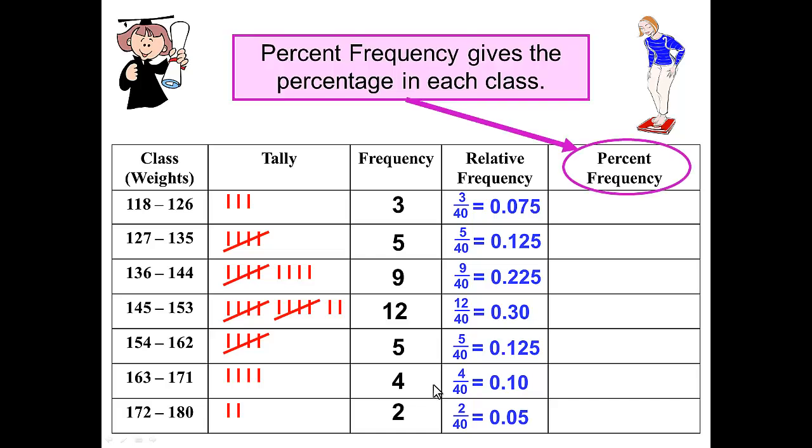And we can find and proceed to find the percent frequency, which gives the percentage in each class. This is where we express the percent of numbers in each class. And to find this, we will simply change the relative frequency into a percent by moving our decimal over two places to the right and adding the percent sign.